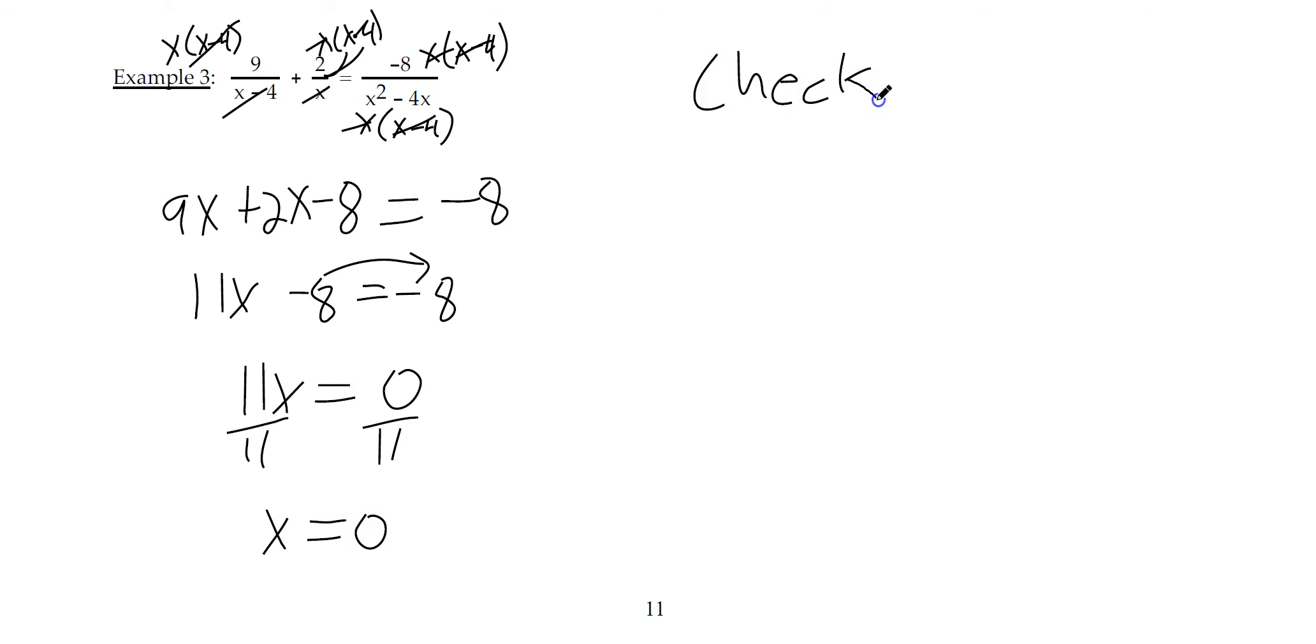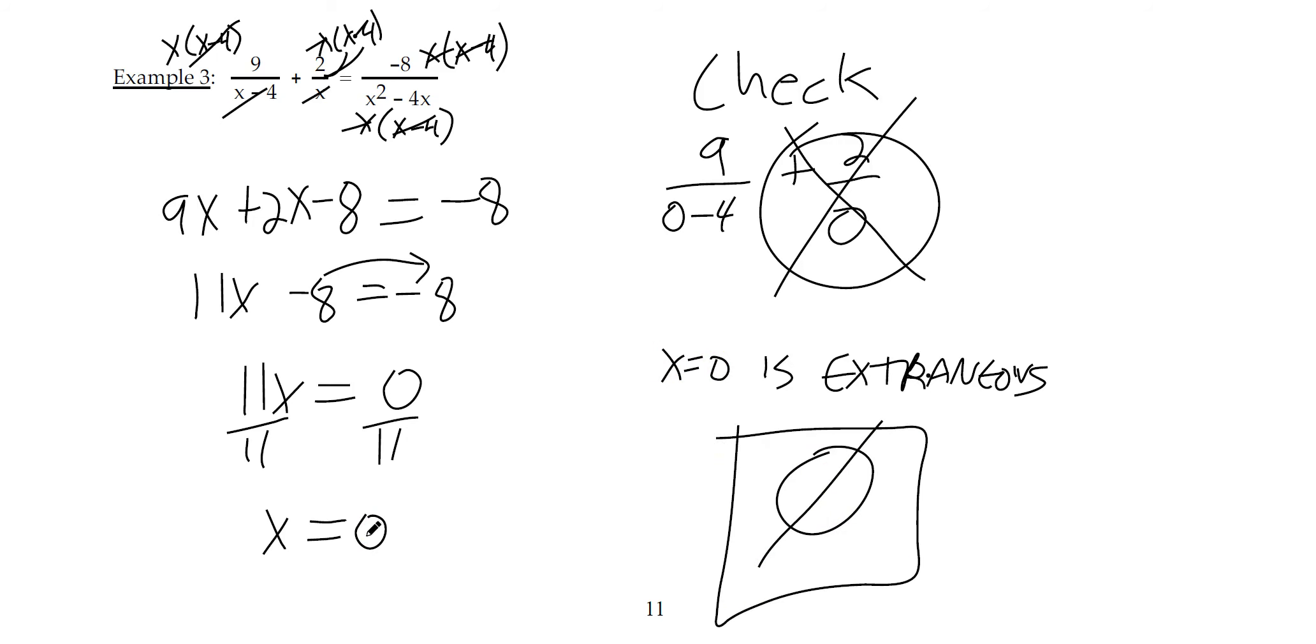And now we check. So that would be 9 over 0 minus 4 plus 2 over 0. Right there, this x equals 0 is extraneous. Can you see what happened? Dividing by 0 is undefined. And even though this showed up is an answer, we have to throw it away. And since we only had one to begin with and we threw it away, we end up with no solution. So you do have to check for extraneous solutions. The very beginning, we've had some practice identifying the domain restrictions. x equals 4, x equals 0. Those are the only two answers that you cannot end up with. And that's the only one we ended up with, so we throw it out.